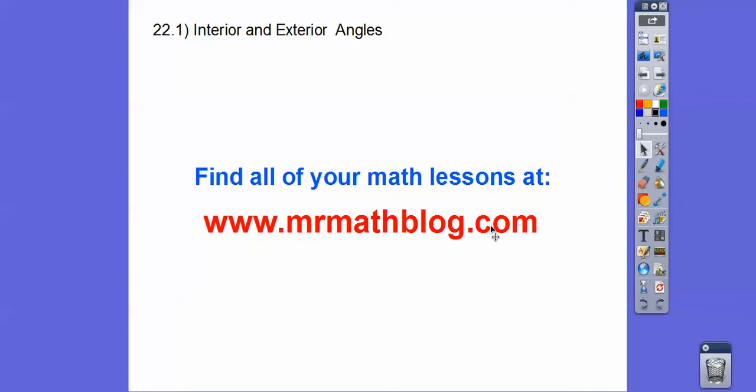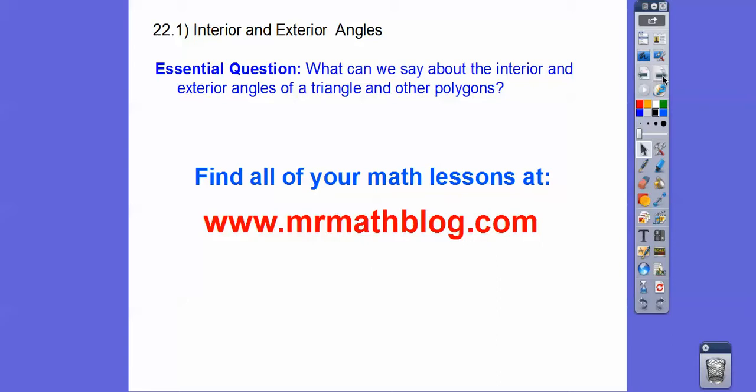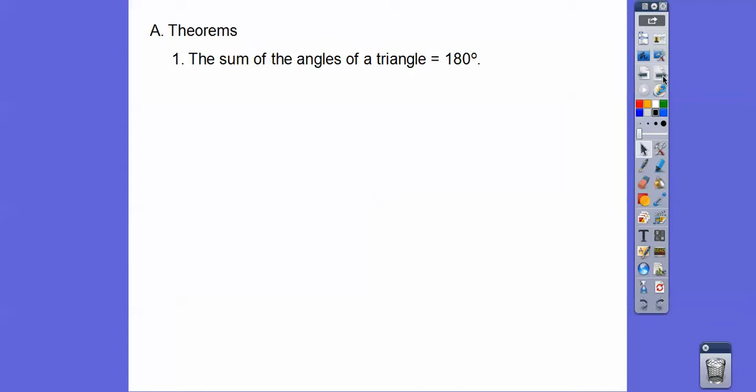So our question here is what can we say about the interior and exterior angles of a triangle and other polygons? You guys have probably heard this before. All the angles in any triangle add up to 180, and if it's not a triangle, the sum of the angles of a convex polygon with n sides is n minus 2 times 180.